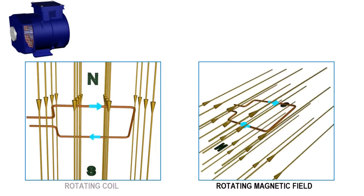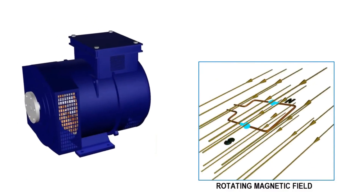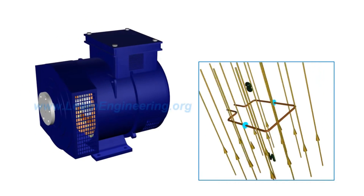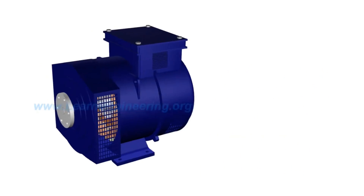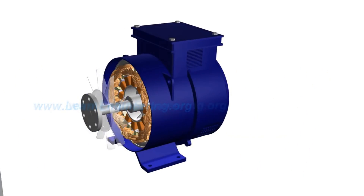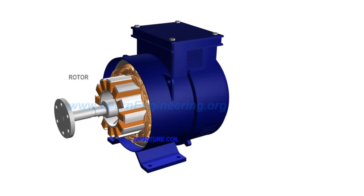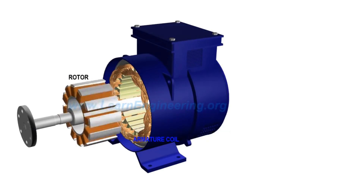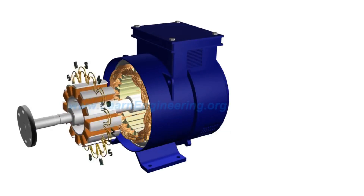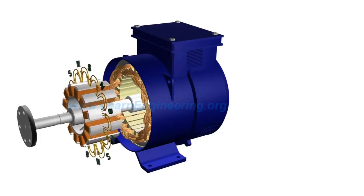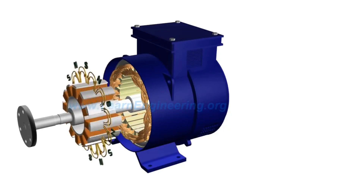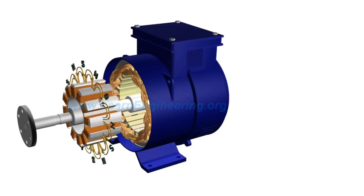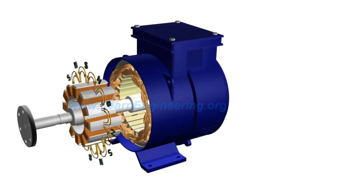In the case of an alternator, the latter approach is used. Rotor and armature coils are the two main parts of an alternator. The rotor produces a rotating magnetic flux, while the armature coils are stationary. The rotating magnetic flux associated with the rotor induces electricity in the armature coils.